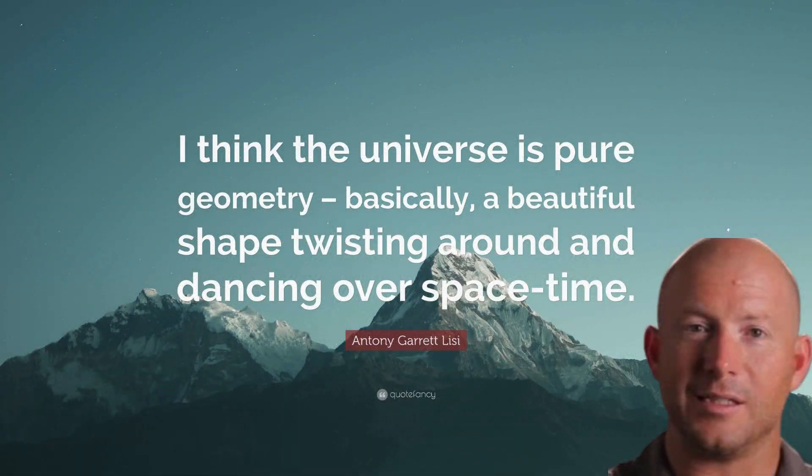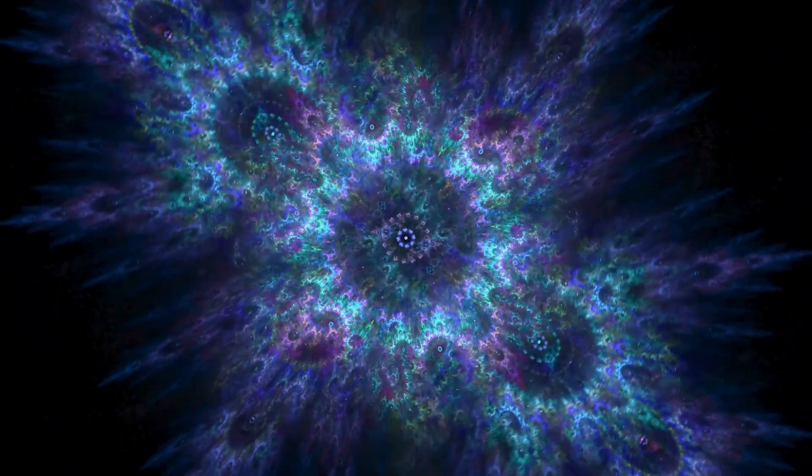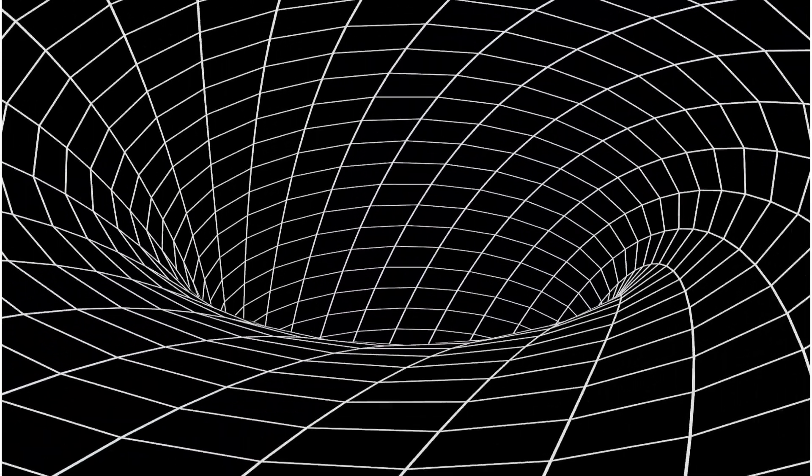In 2007, physicist Garrett Lisi proposed that each particle in the universe corresponds to a point within the E8 lattice. This would mean that the interactions between particles, the forces we observe, are encoded in the geometry of E8.